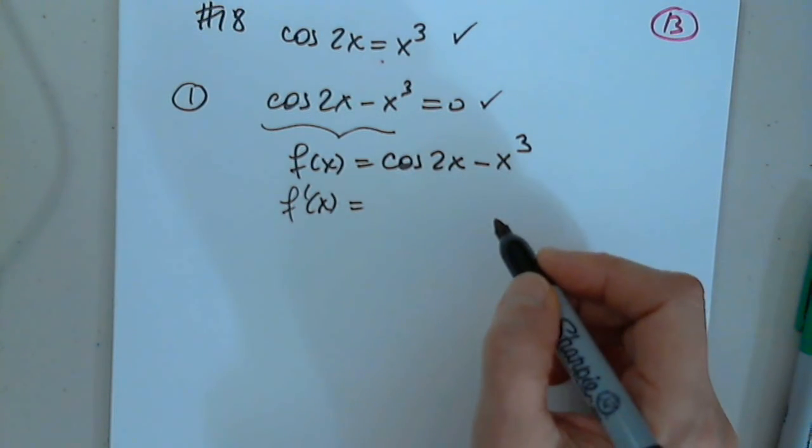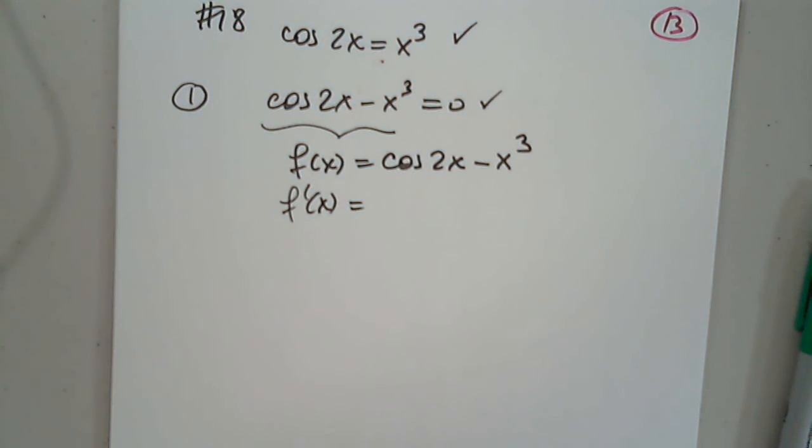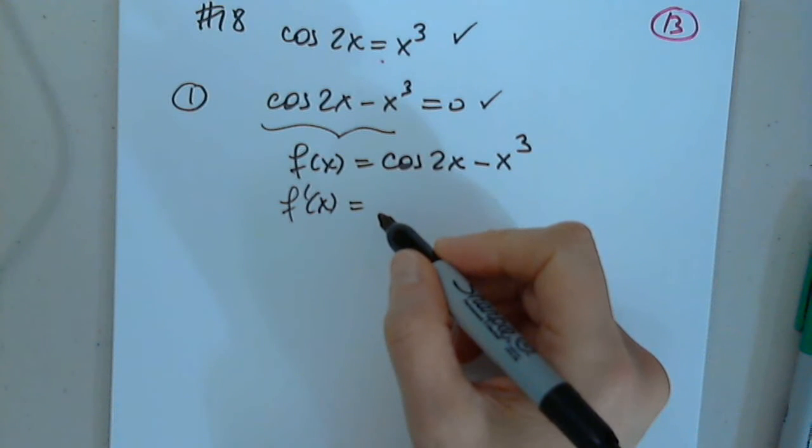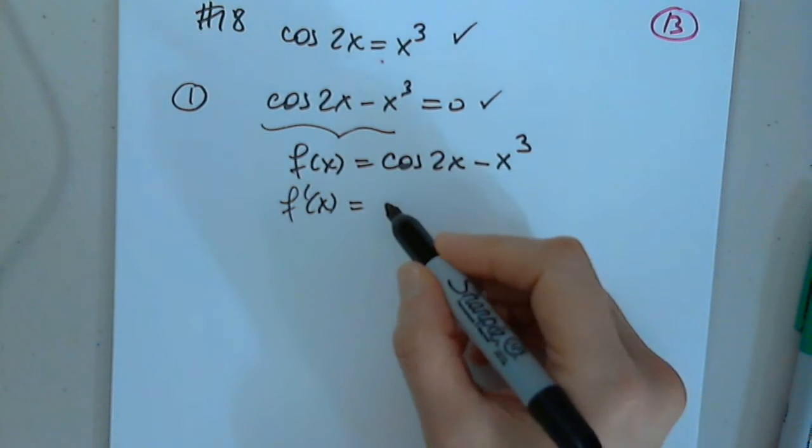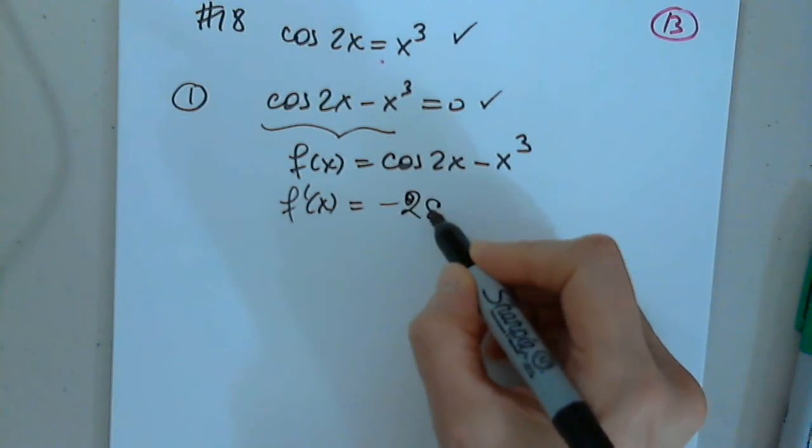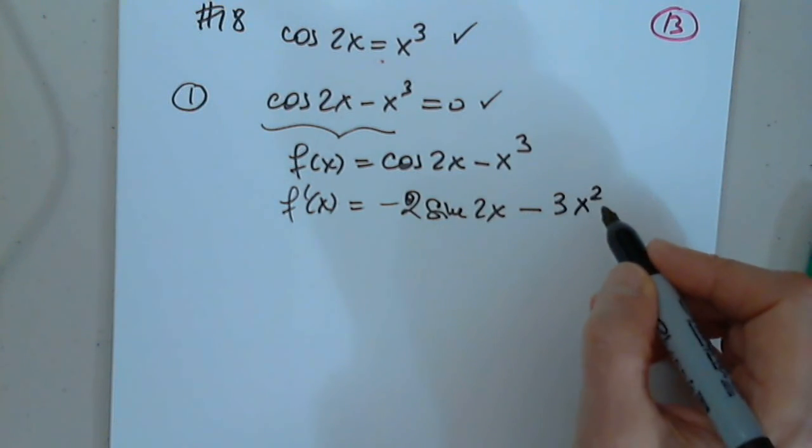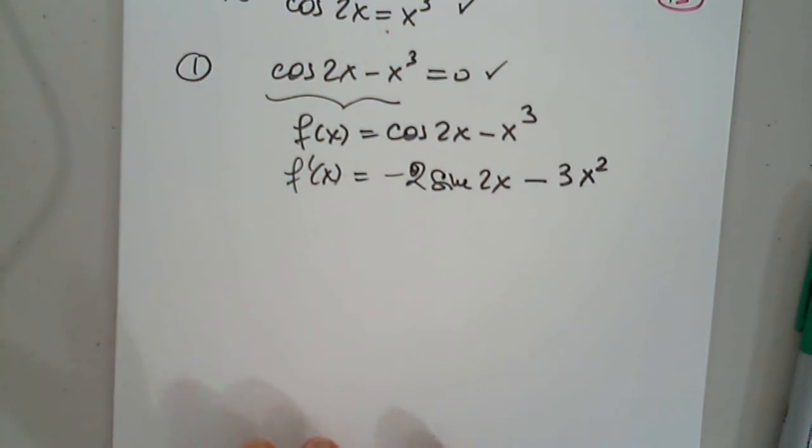Can anyone give us a derivative of this? Cosine 2x. Is it 2 sine? Negative 2 sine of 2x. Very good. Excellent. Minus 3x squared. Perfect. That was Jordan. Thank you.